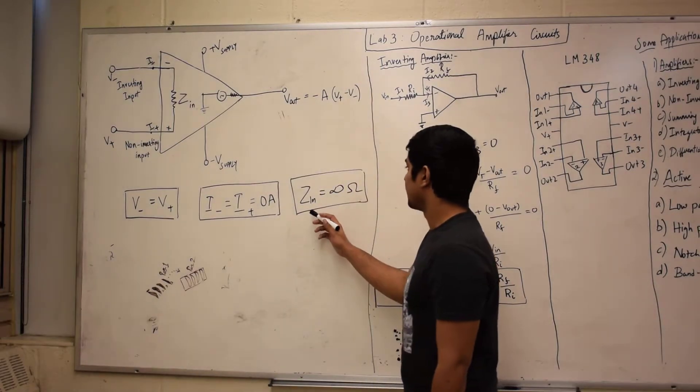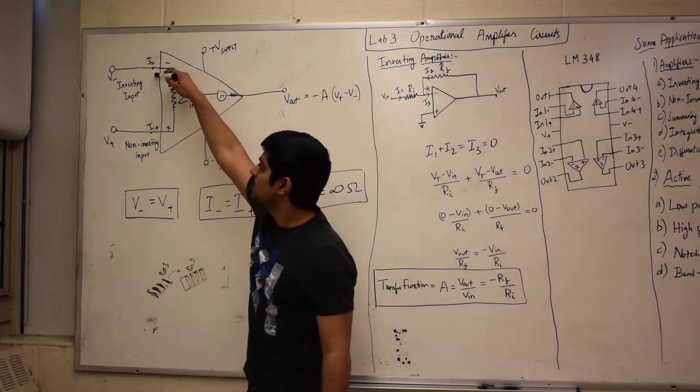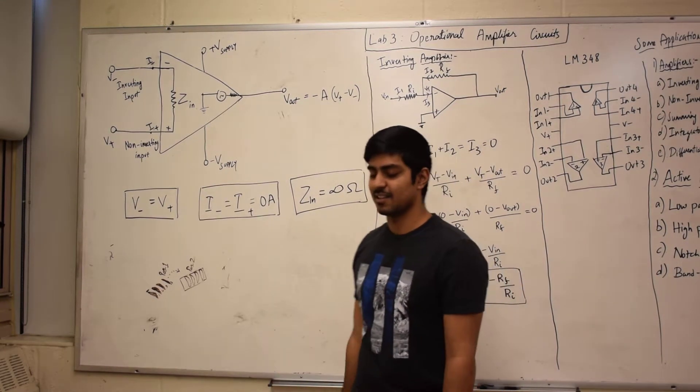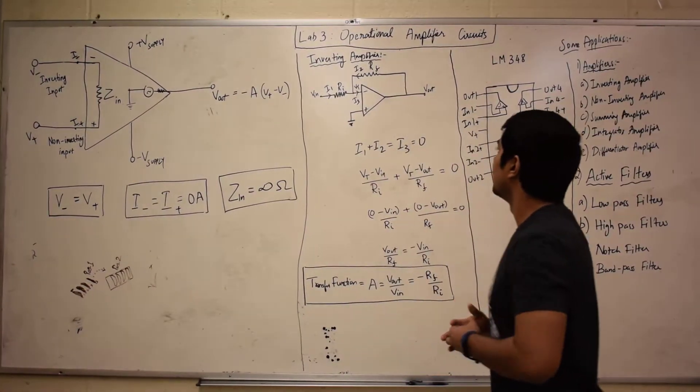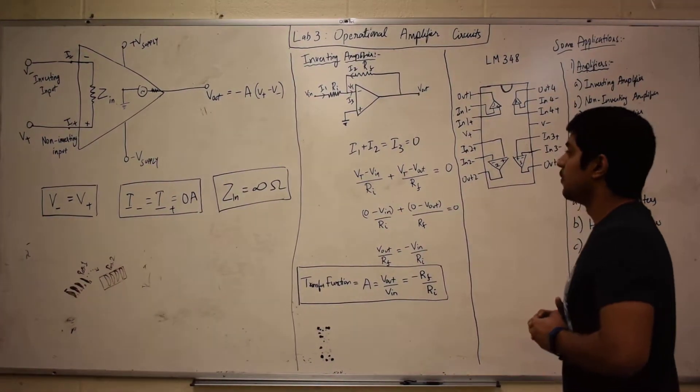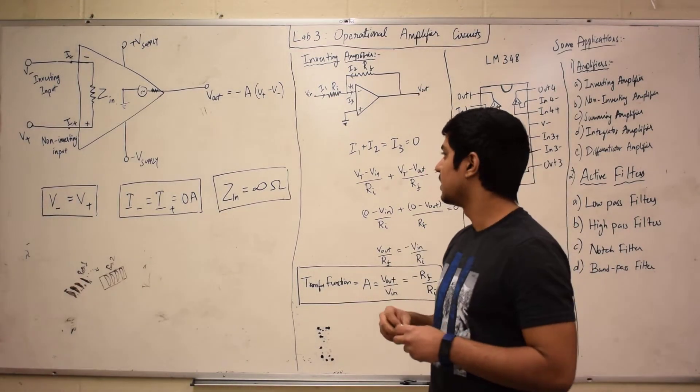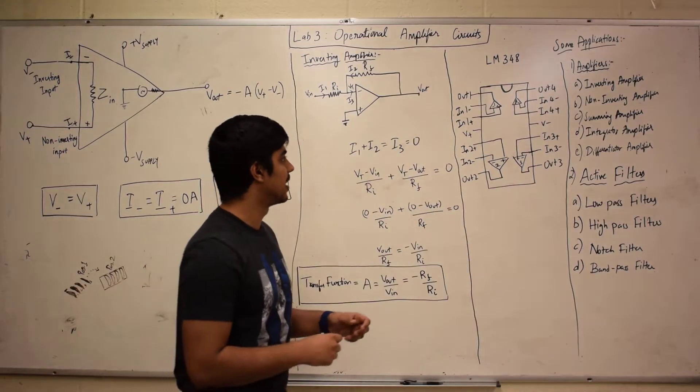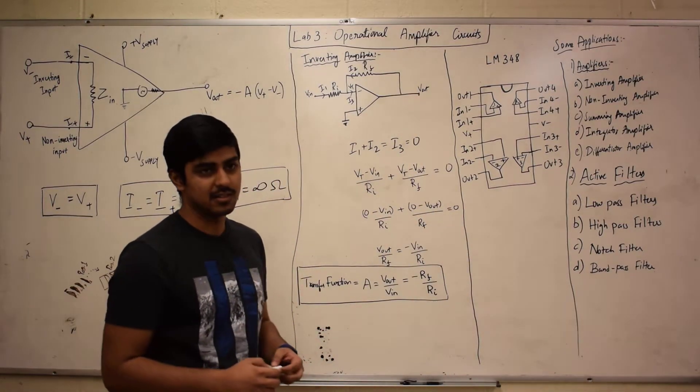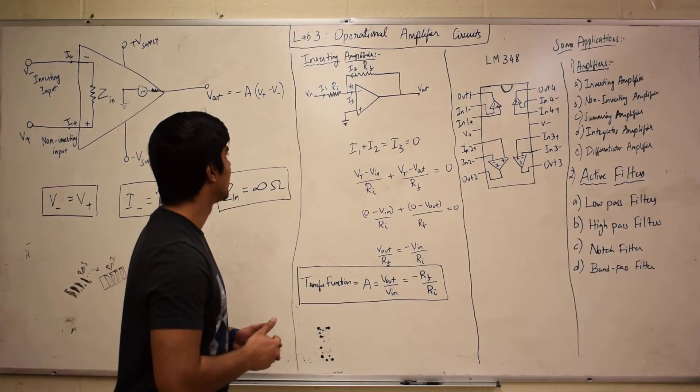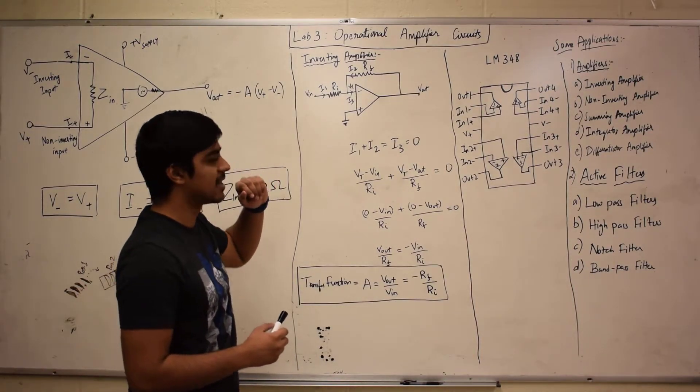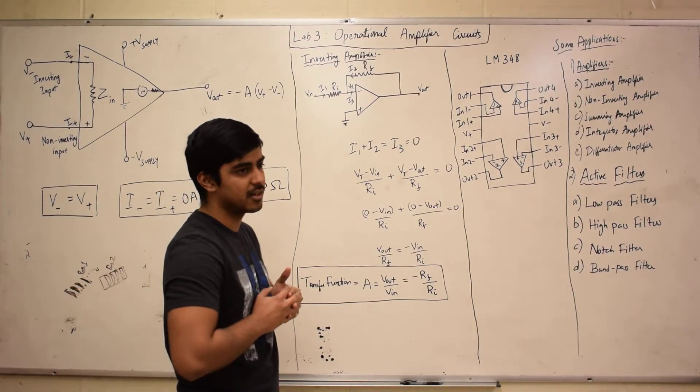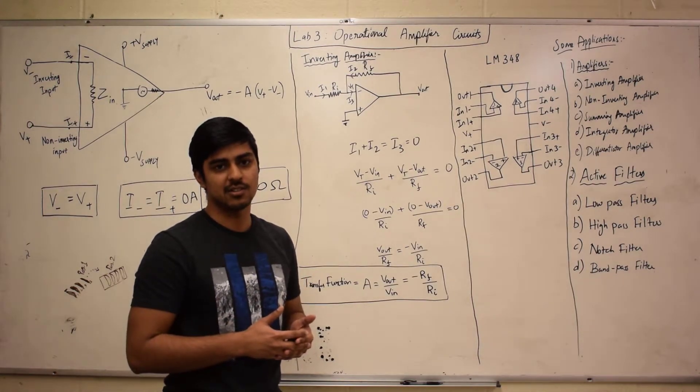The resistance between both terminals is considered to be infinity. Remember, this is in an ideal case. The way you use op-amps for making amplifiers is by selecting a set of resistors and capacitors and making a circuit. I'm going to give you an example of how to make a circuit for an inverting amplifier and how to derive the transfer function for it.